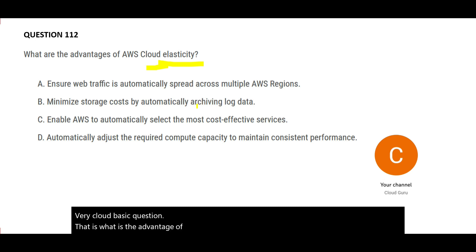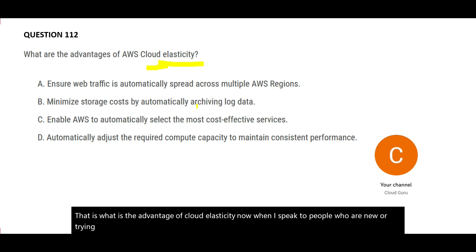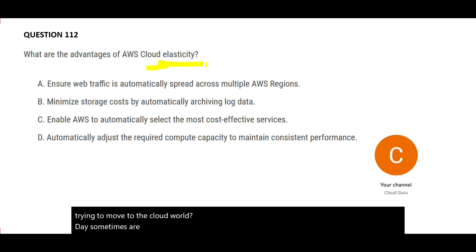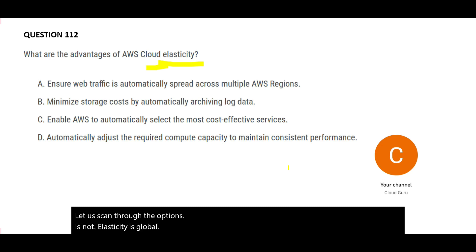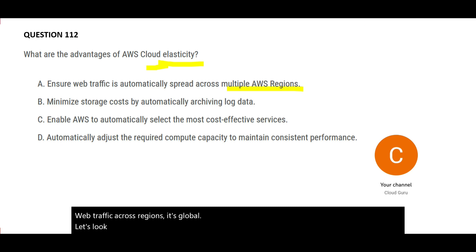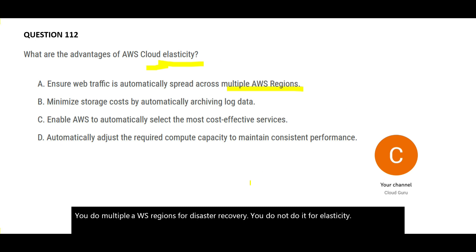Next is a basic question: what is the advantage of cloud elasticity? People new to the cloud world sometimes struggle to explain elasticity. Option A is about global reach — spreading web traffic across regions. Option B says minimize storage costs, but elasticity has nothing to do with storage costs or archiving log data. You use S3 archive or Glacier for that.